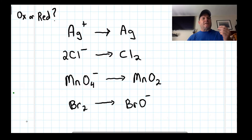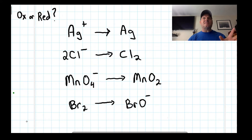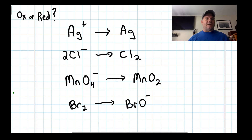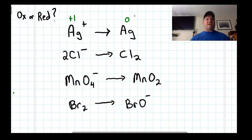We've learned how to obtain the oxidation numbers of elements within a compound. Sometimes it's very simple. The examples we talked about are looking at Ag⁺ going to Ag. Ag has a plus one oxidation state here and a zero oxidation number here. To go from one to zero, clearly this is a reduction.